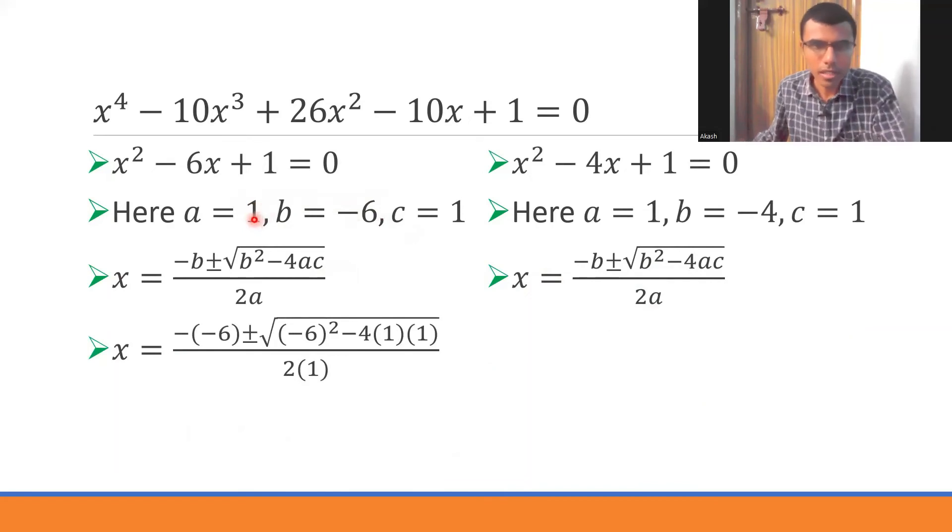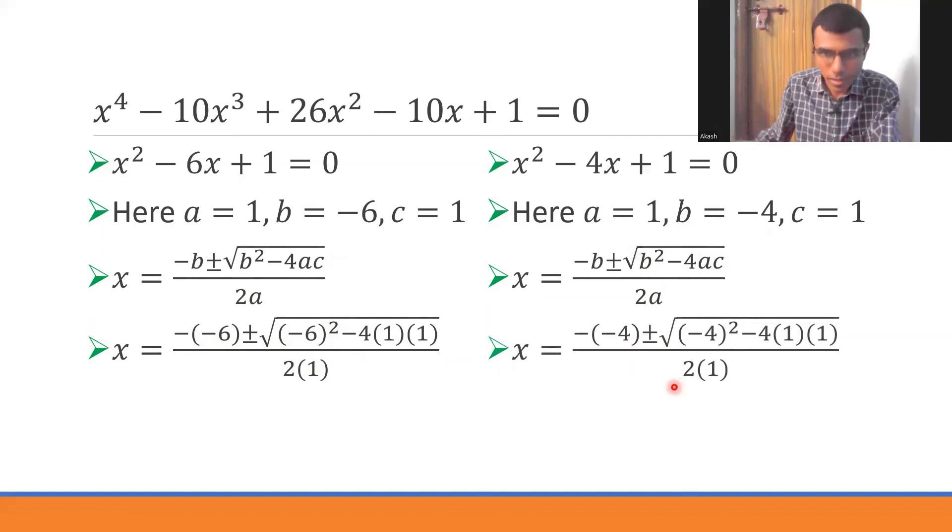Now substitute the values. Here for the first case I have b as -6, a as 1 and c as 1. -(-6) would be +6. (-6)² is 36 and then 36 - 4. Similarly put these values here. -(-4) is 4 and (-4)² is 16 and 4·1 is 4.